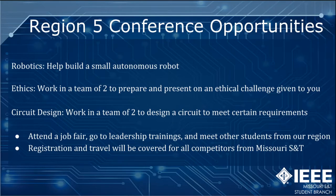Region 5 is a conference that includes design team and group challenge events taking place in April of each year. If you join a robotics team, you will be working on an autonomous robot designed to complete a given task that incorporates current world problems and events. In ethics, teams will be given a real-world scenario and tasked with figuring out who was in the wrong and what should have happened. Our circuit design team is tasked with creating a specific circuit given a small set of components and time. Other amenities of attending the Region 5 event include an on-site career fair, leadership training, and networking opportunities.